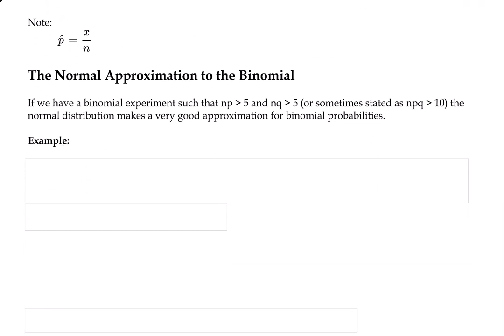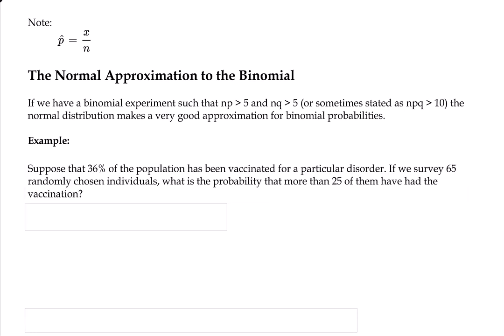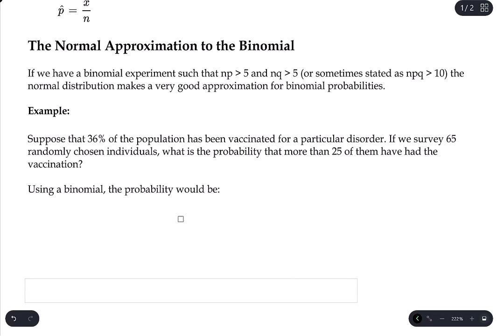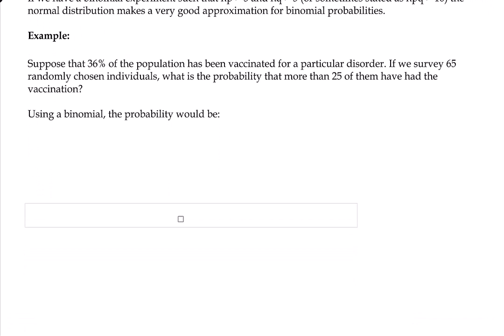So we're going to take a look at how that might actually work out. So suppose that 36% of the population has been vaccinated for a particular disorder. If you survey 65 randomly chosen individuals, what's the probability that more than 25 of them had had the vaccination? Alright, so first we're going to calculate this using binomials.